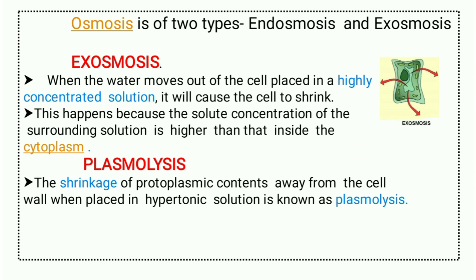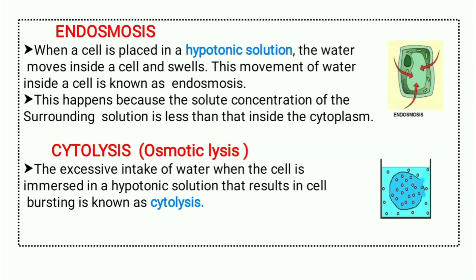Now let's see endosmosis. Endosmosis is a process when we place a cell in a hypotonic — meaning very diluted — solution. Water enters from outside to inside to maintain equilibrium, and because of that the cell's size increases.